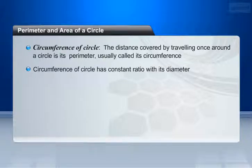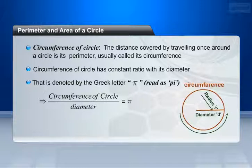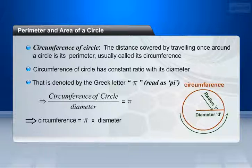Circumference of circle has constant ratio with its diameter. That is denoted by the Greek letter π (pi). This implies that the ratio of circumference of circle to its diameter is equal to π. This implies that circumference of circle equals π into diameter.